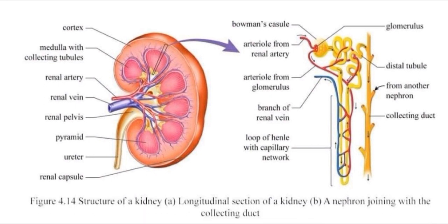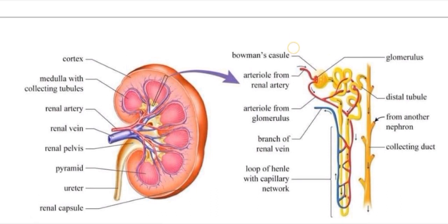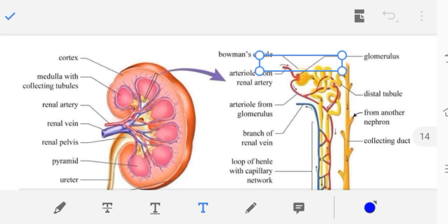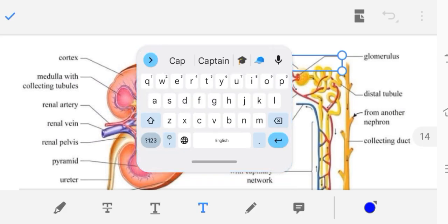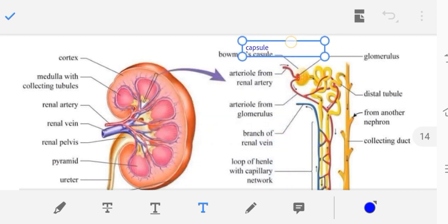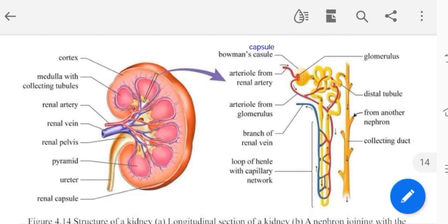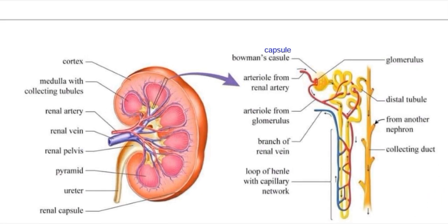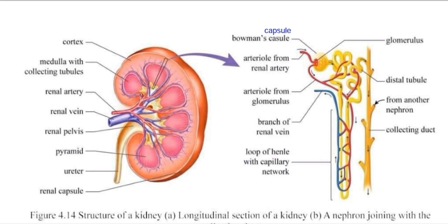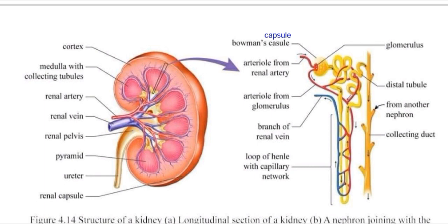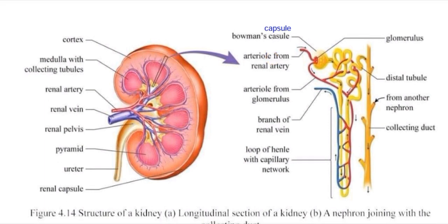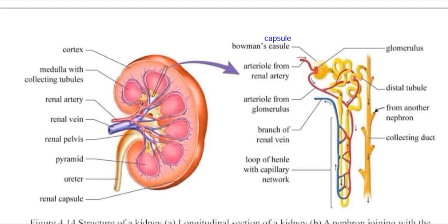We need to know the nephron. Every nephron has a Bowman's capsule. From the renal artery, blood is supplied to the nephron units.